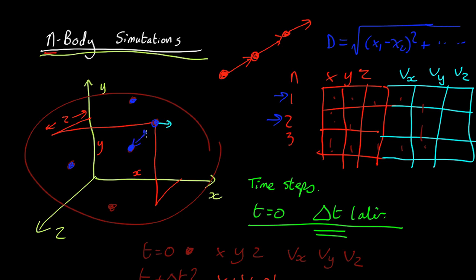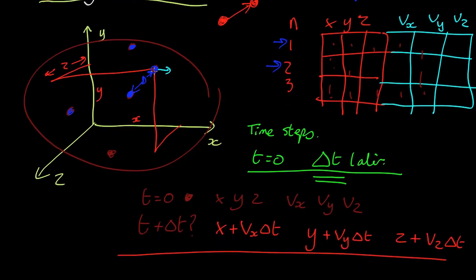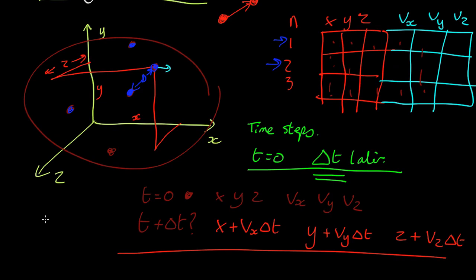So that will tell us what the distance here is. Once we know the distance, we can now calculate the force, which is just going to be given by Newton's law of gravity: F = G m1 m2 over the distance squared.